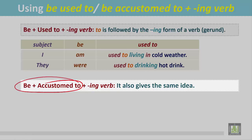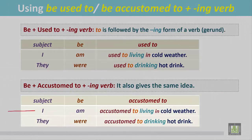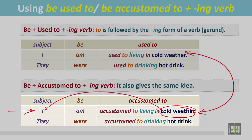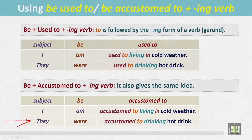'Be accustomed to' is also followed by the ING form of the verb, and it gives the same idea. See the examples: 'I am accustomed to living in cold weather.' These two sentences give the same idea — that cold weather is normal to me. 'They were accustomed to drinking hot drink.' So 'accustomed to' is followed by the ING form of the verb: drinking.